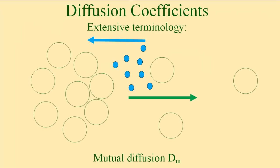I begin by discussing diffusion coefficients. There's a very extensive terminology for diffusion coefficients; the terminology is not all consistent, and I use only a narrow section of it. We start by looking at the simplest diffusion experiment: on the left, a concentrated solution of green circles; on the right, a considerably more dilute solution. Fick's law tells us that for a normal system, we have diffusion down the concentration gradient. The solution relaxes, and we are looking at what I will term mutual diffusion, described by the mutual diffusion coefficient D_M.